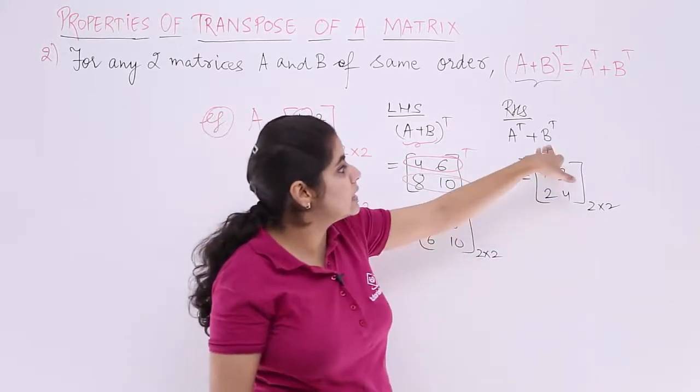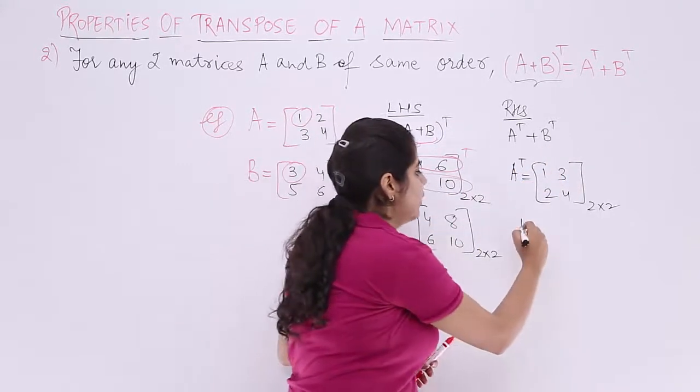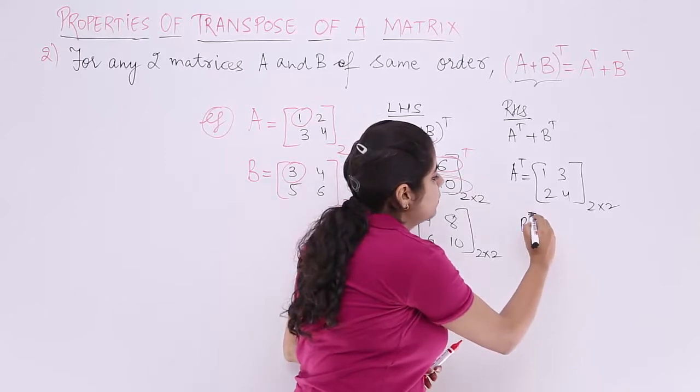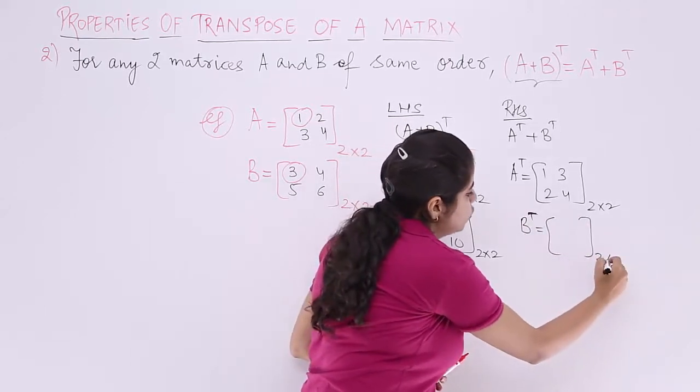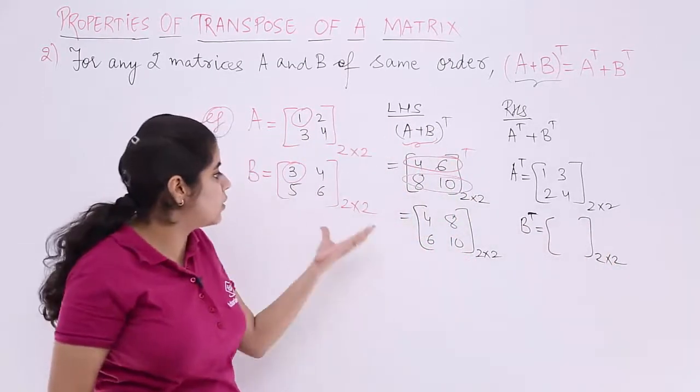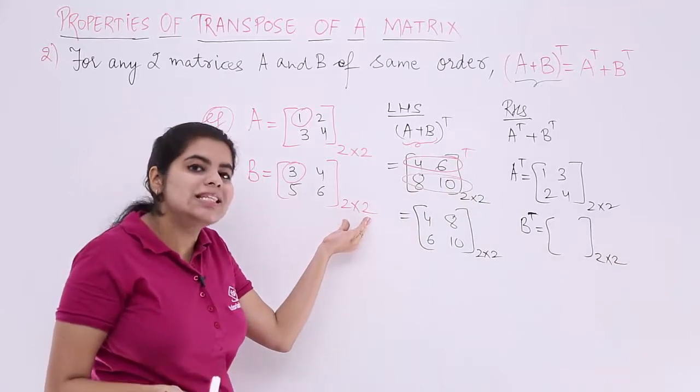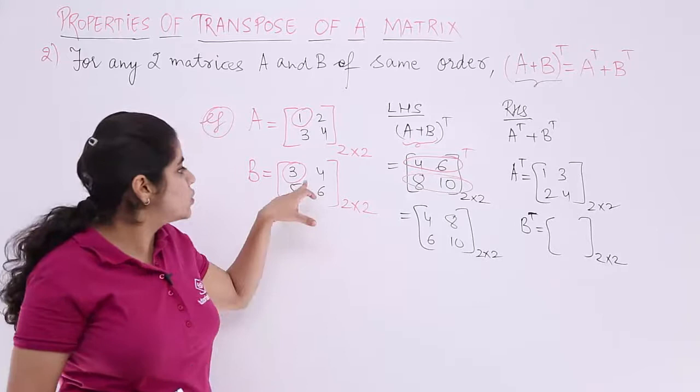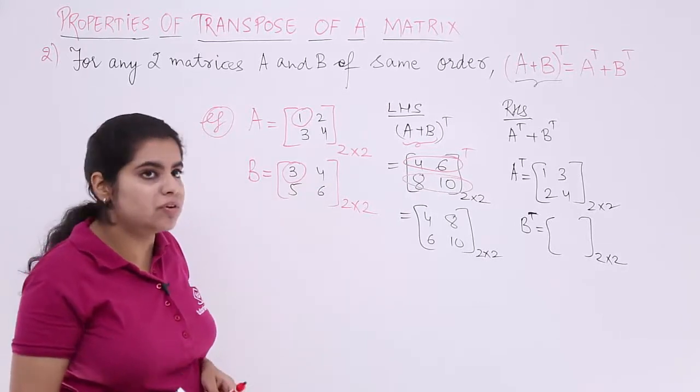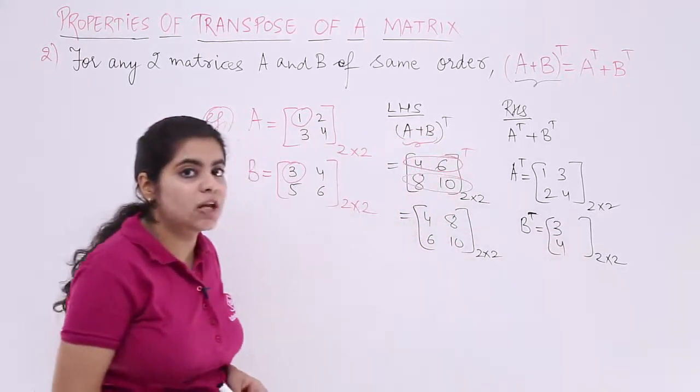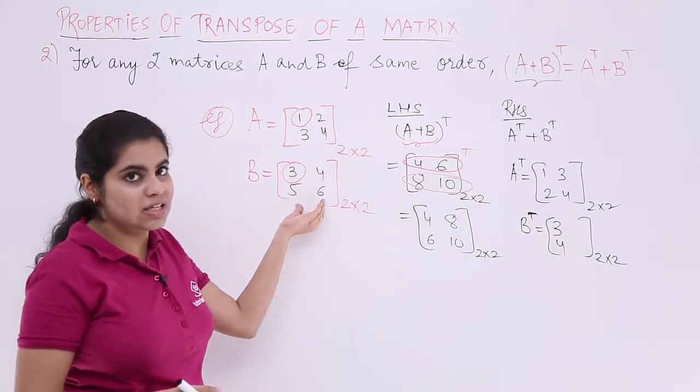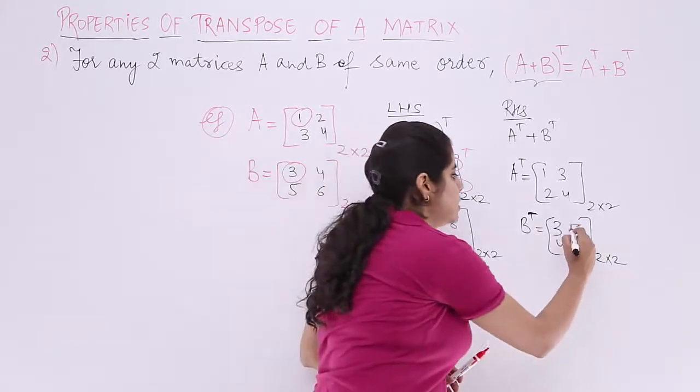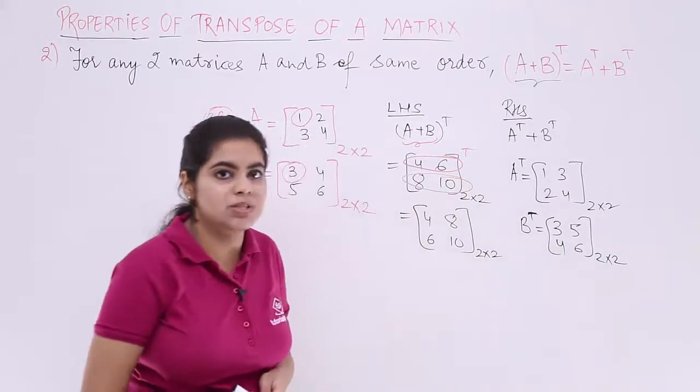What about the next thing which is B transpose? Let's find out B transpose. B transpose is again a 2 by 2 matrix. How and why? Because here even if you interchange, the same numbers are there. The numbers will be same only. The first row 3, 4 becomes the first column. So 3, 4 becomes the first column. Moving here, 5, 6. Second row becomes the second column. So 5, 6 comes here.